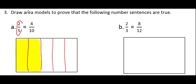So, I have the first fraction. Now, I have to think, well, how am I going to turn my fifths into tenths? Well, since 5 times 2 equals 10, then I know I need 2 rows.